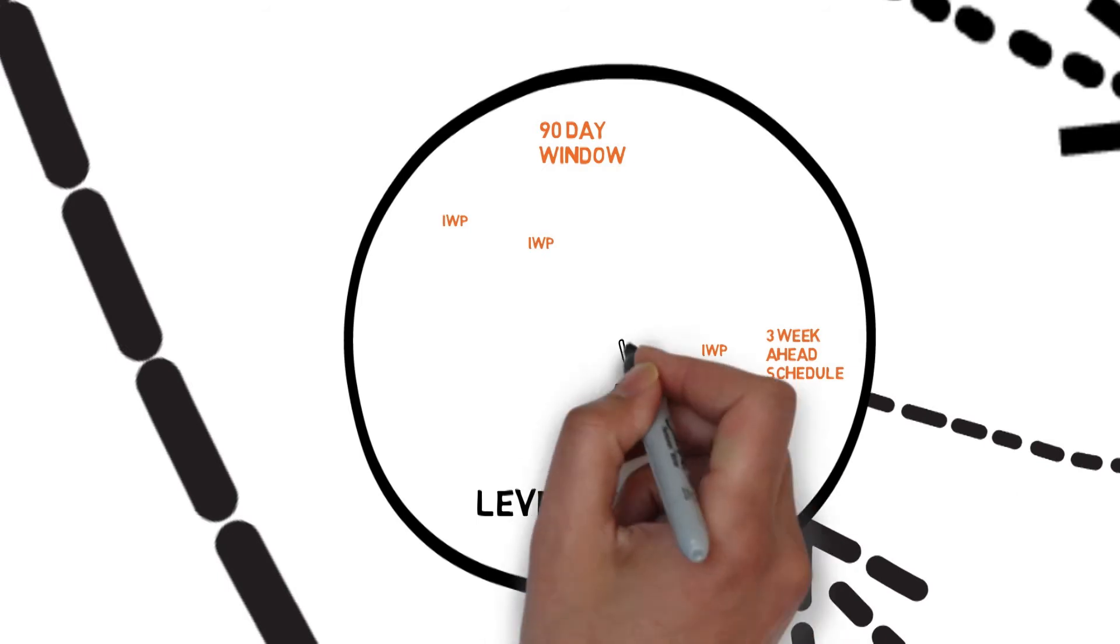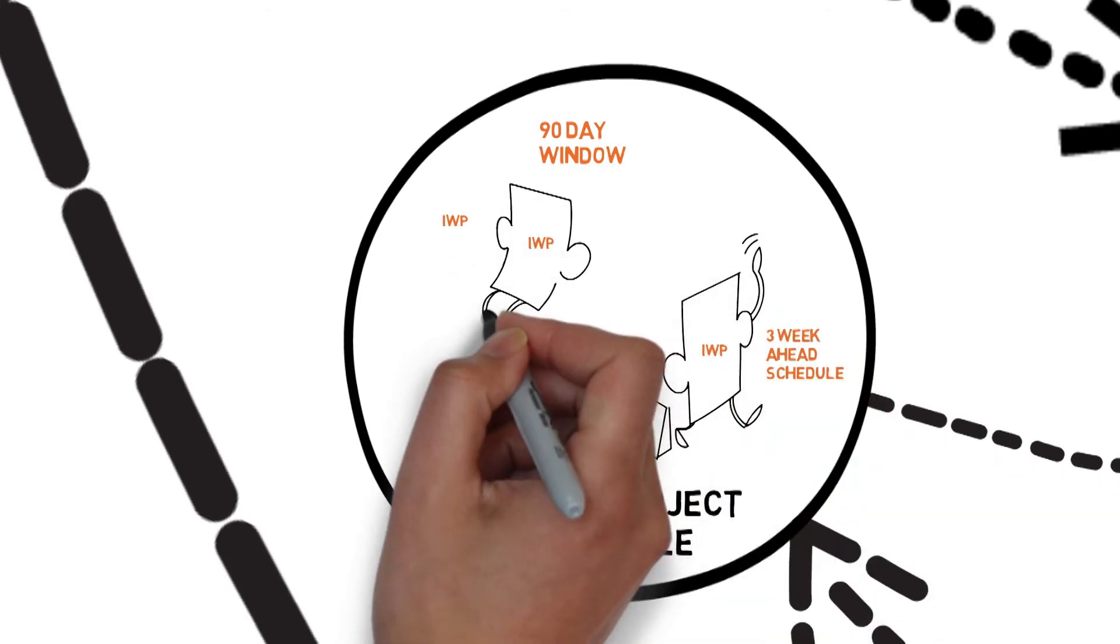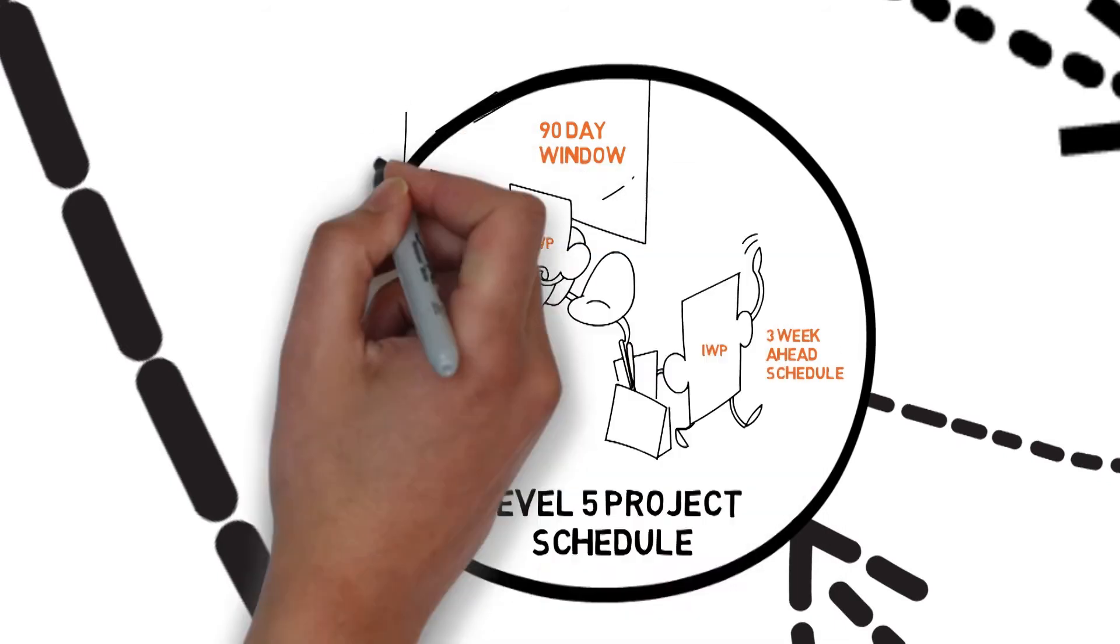As the materials are confirmed through soft allocation, the IWPs move into backlog, which is then used to develop the 3-week look ahead.